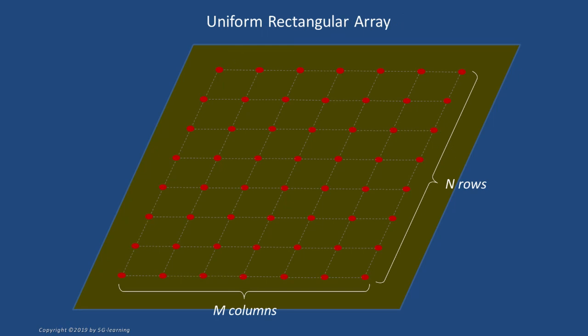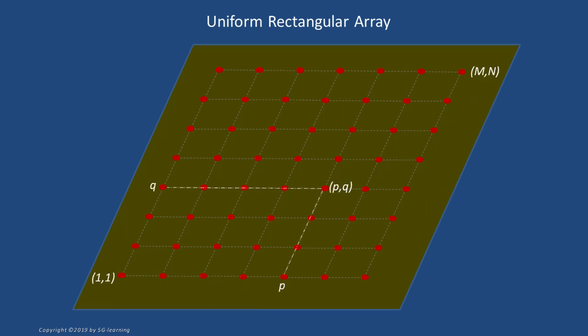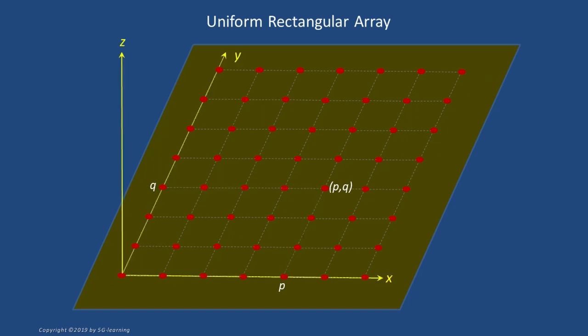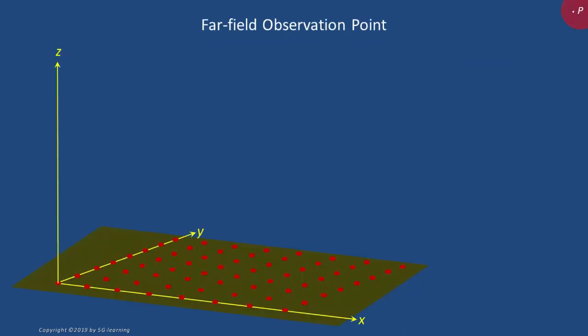Our array includes M columns and N rows. Let's call element 1-1 the bottom-left element. The element located at the intersection of column P with row Q is called PQ, and the top-right element is called MN. To complete our scaffold, let's draw a z-axis perpendicular to the array plane. If ux, uy, and uz are the unit-length vectors in the x, y, and z directions respectively, a vector r can be expressed as the addition of its three Cartesian projections.